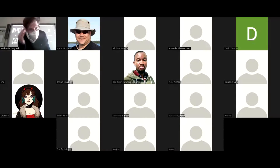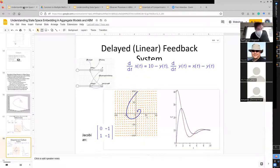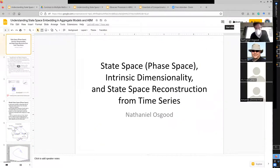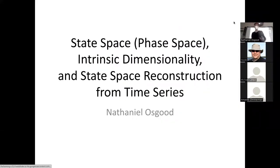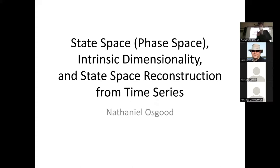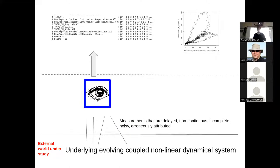I want to talk about this interface between data and models in a new way. We'll be talking about state space, which is often termed phase space partly for historic reasons. We're going to be talking about nominal and intrinsic dimensionality — the theoretical number of degrees of freedom of a system versus how much it actually occupies. As time allows, we'll talk about state space reconstruction. This is about the interface between what's going on in the world and what's going on in the model.